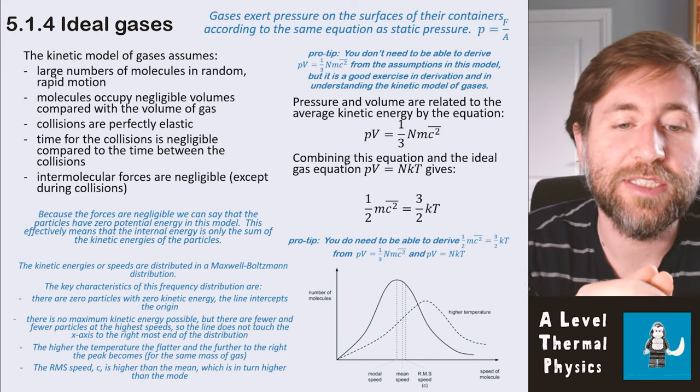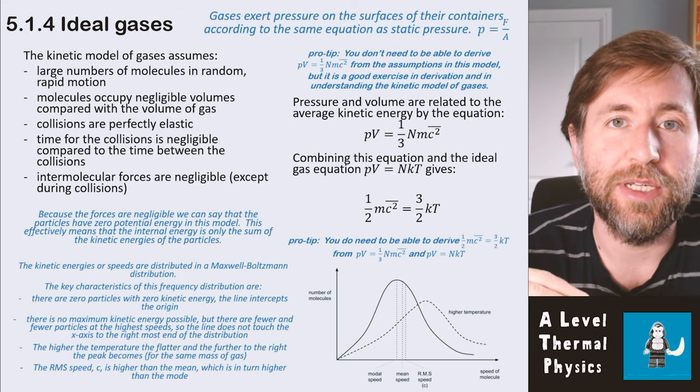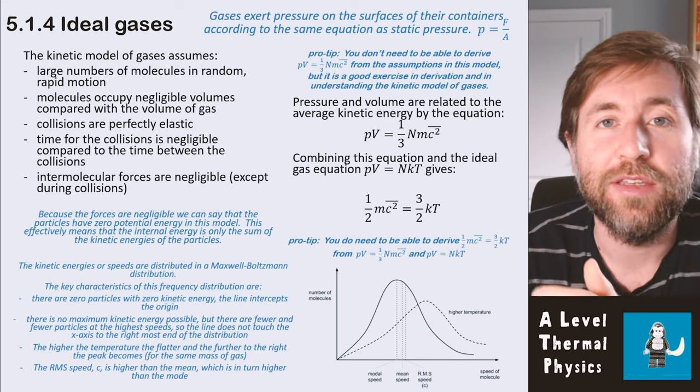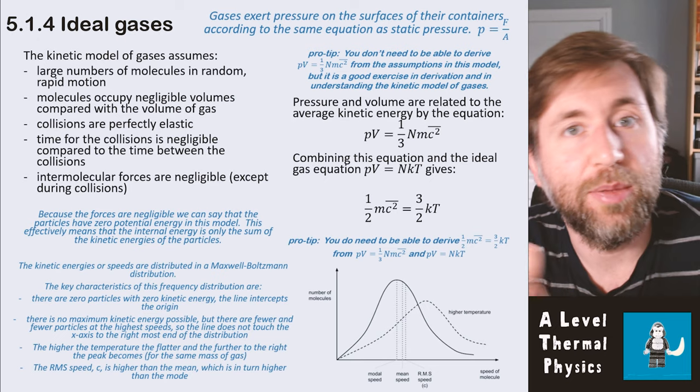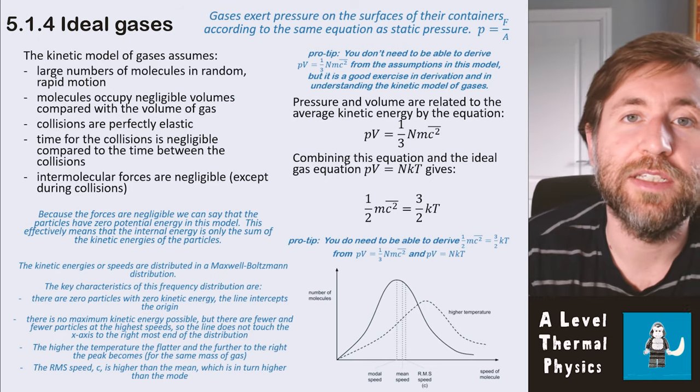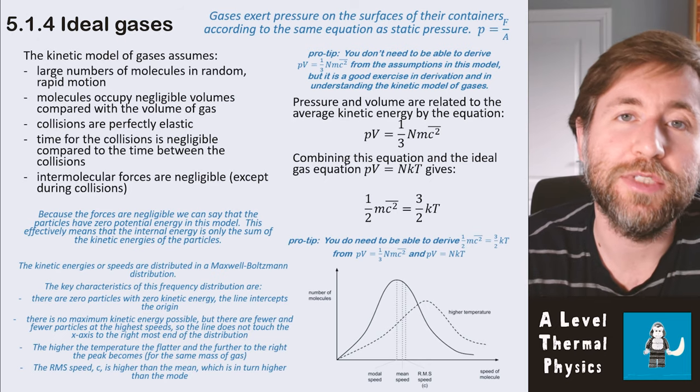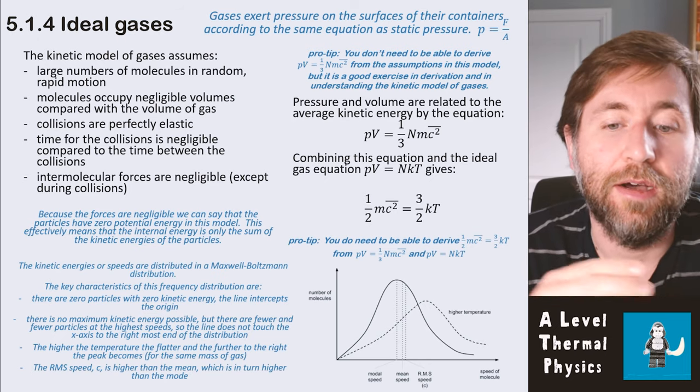And then lastly, the RMS speed, which we give the symbol c̄ is the root mean square speed. And that's an idea that we use when we're modeling ideal gases, when we want to ignore the vector nature of that motion. So because one speed could be positive and one speed could be negative, if we square them all, then we get rid of those negatives, but we have to then root again to get back to what we call the root mean square speed, the RMS speed.